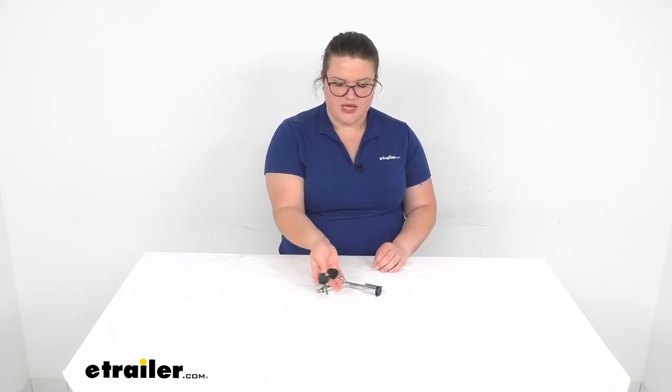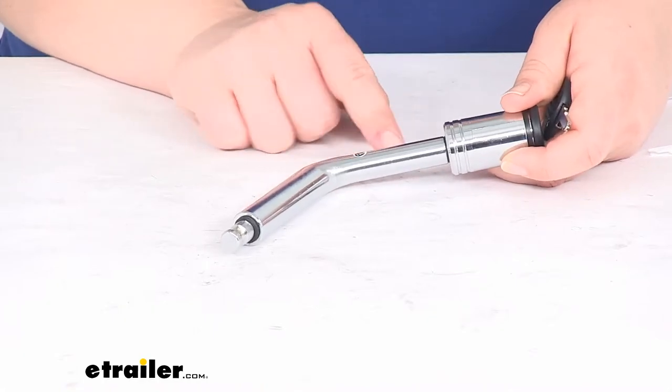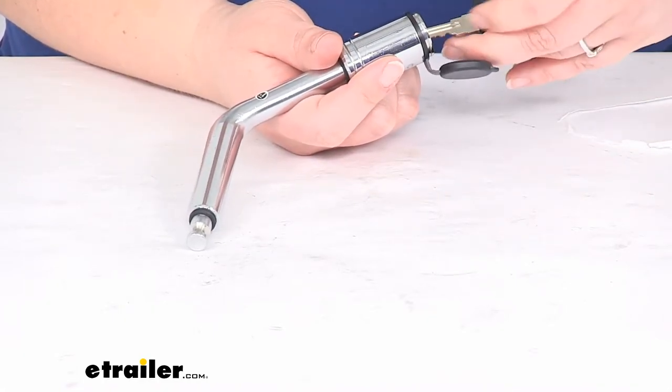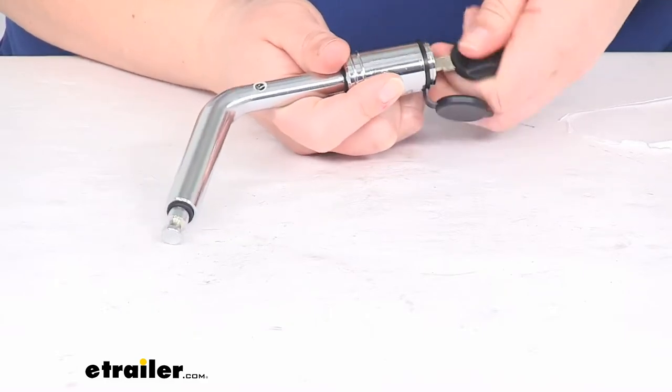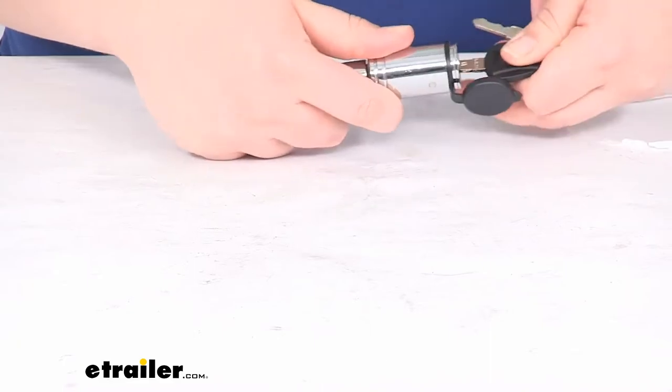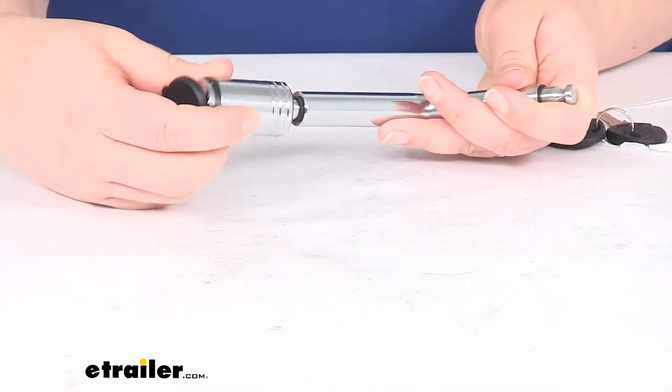It does come with two keys to unlock that. To go from one to the other, right now I'm on the Class 2 side, so that half-inch diameter side. Put in my key, unlock it, switch it over to the other side, lock it down, and boom. That's all there is to it to switch from one to the other.